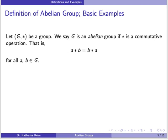Here is our basic definition. Let G be a group with operation star. We say that G is an abelian group if star is a commutative operation, that is, that a star b equals b star a, for all a and b in the group.